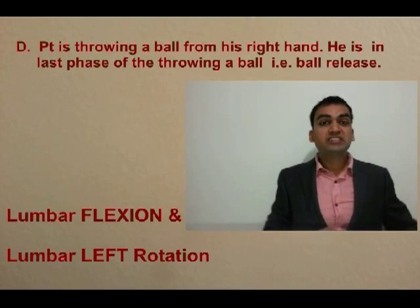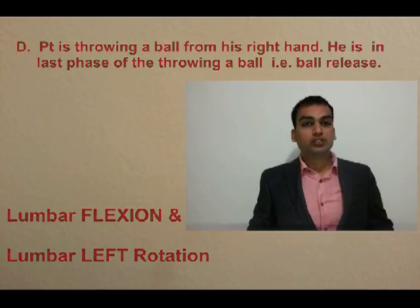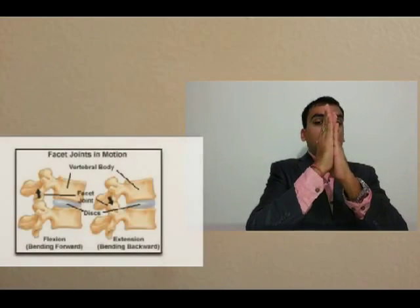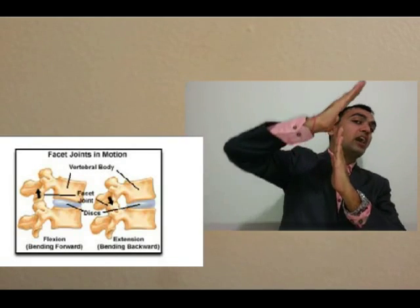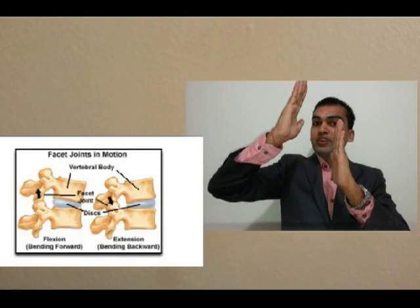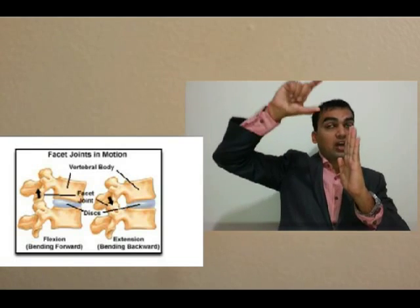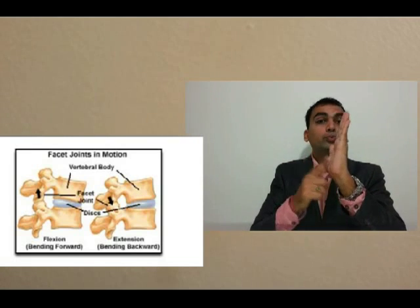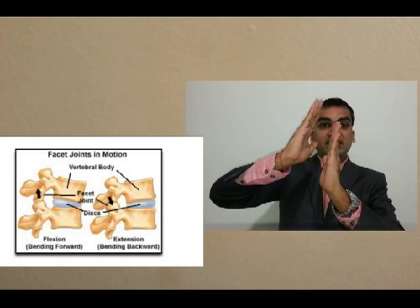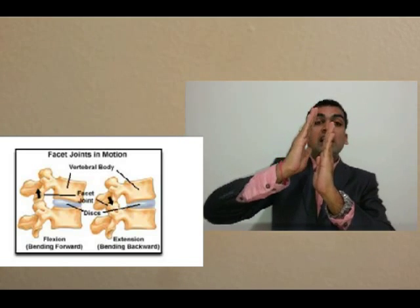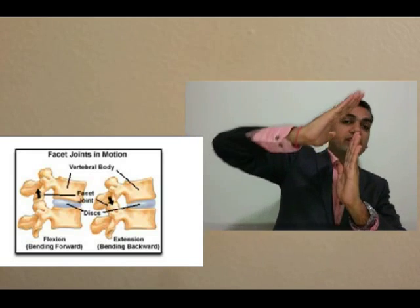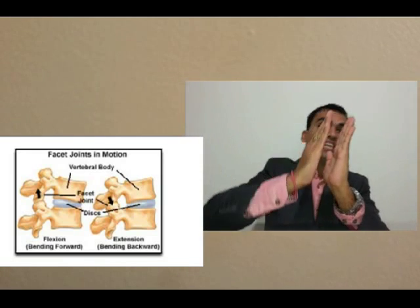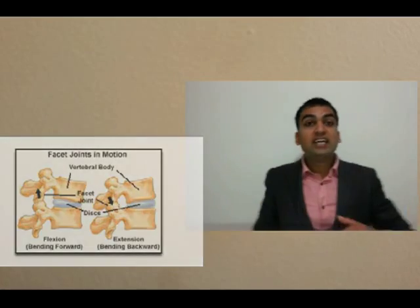Let's talk about the biomechanics of the lumbar facet joint. Looking at the right side facet joint orientation: when you do flexion movement, the inferior process of the superior vertebra — oriented at a certain angle — opens up. When you do extension, it closes down. This happens bilaterally on both sides.